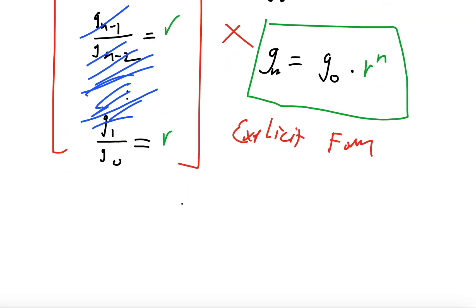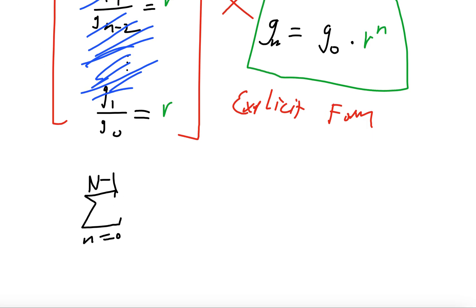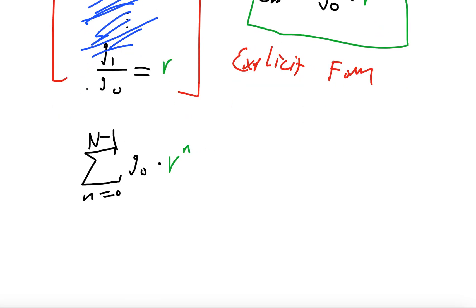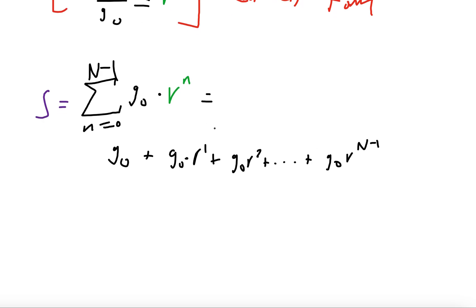The series is essentially the sum of the first N terms: the sum of n going from zero to big N minus one of g-naught times r to the n. Be careful here, because zero counts as an entry, so zero to N minus one gives N entries. Is there a nicer way we can express this sum without computing it by hand? Let's call it S. Written out, S equals g-naught times r to the zeroth power, which is g-naught, plus g-naught times r to the first power, plus g-naught r squared, and so on and so forth, until we get to g-naught r to the N minus one.